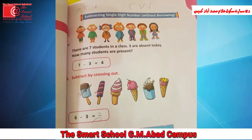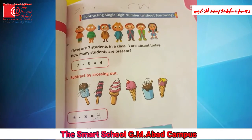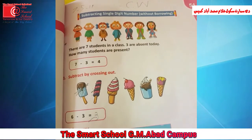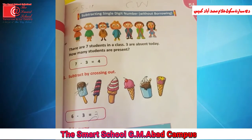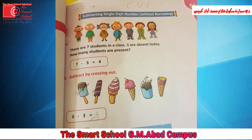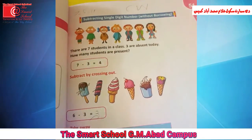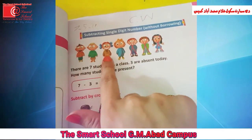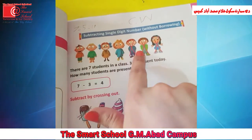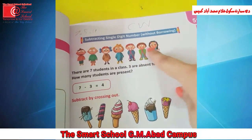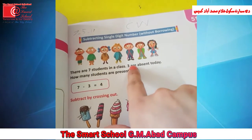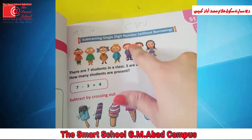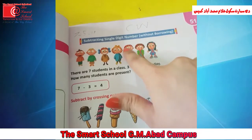Question number one: There are seven students in a class. Three are absent today. How many students are present? Total students हमारे पास seven हैं — one, two, three, four, five, six, seven. Seven में से अगर हम three less कर दें, three निकाल दें, उनको absent कर दें, तो हमारे पास कितने बचेंगे?